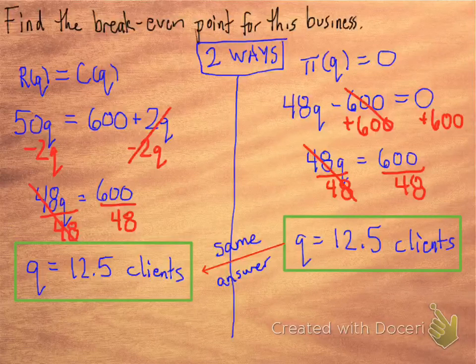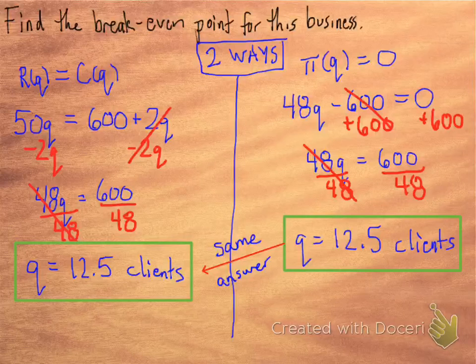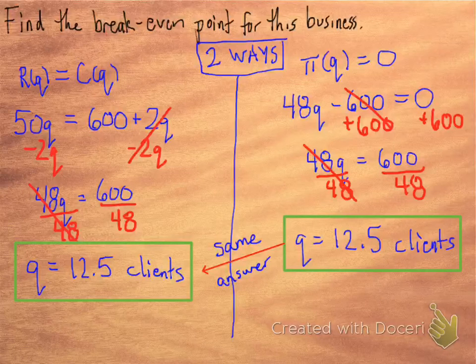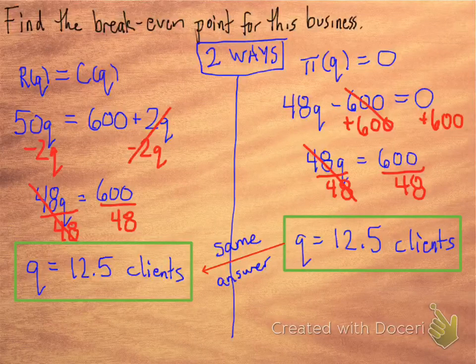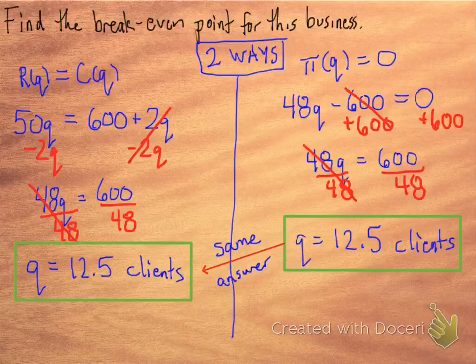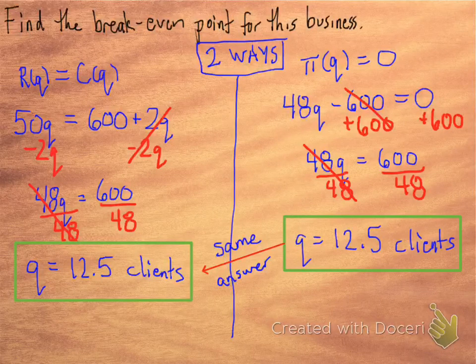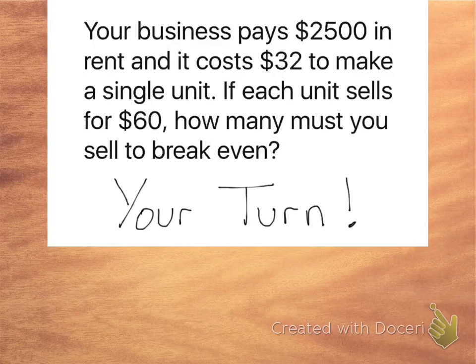So either way, you will get the same answer. Now, 12.5 clients—you can't really have 0.5 clients. So you can say 12.5, or you can say 13, and that might be a better answer. 13 clients is where you get a little bit of money, but still not very much. Alright, your turn.